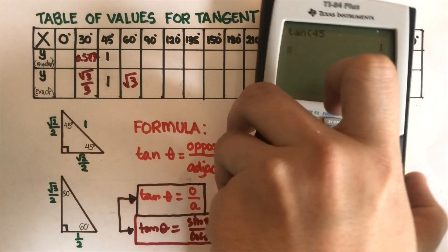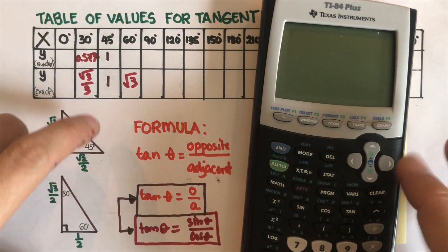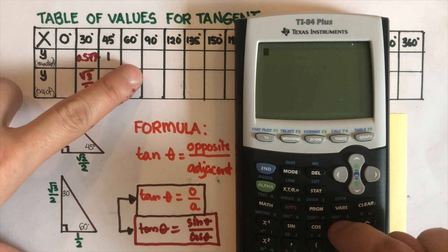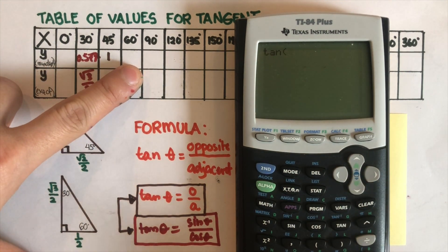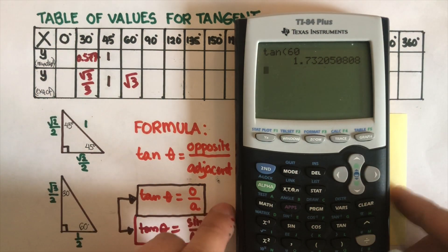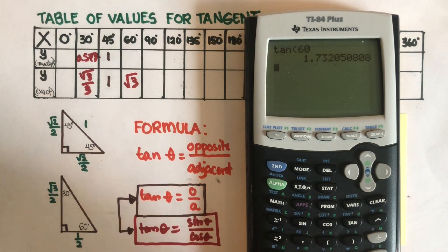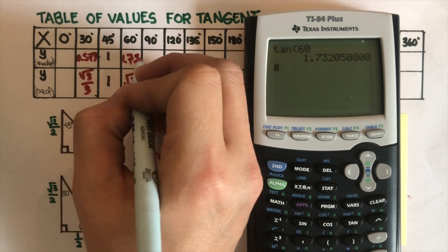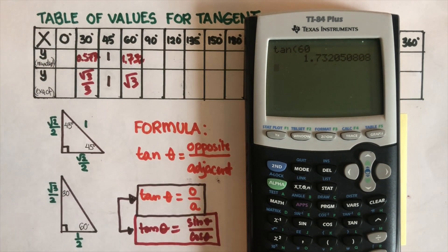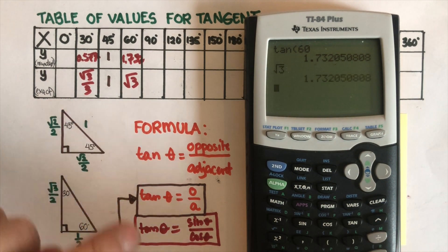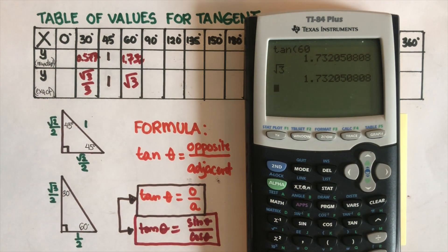To get the rounded value we use the calculator. Tangent 60 is 1.732. And let's check square root of three — it's exactly the same number, so they match.